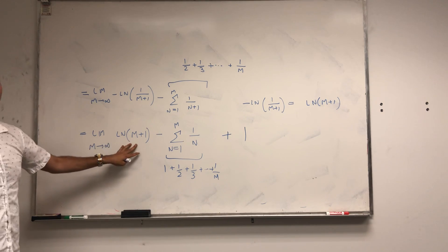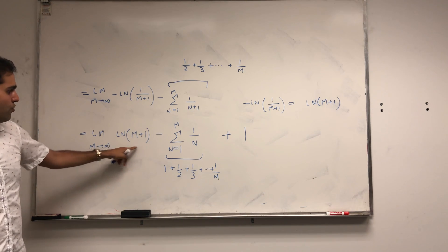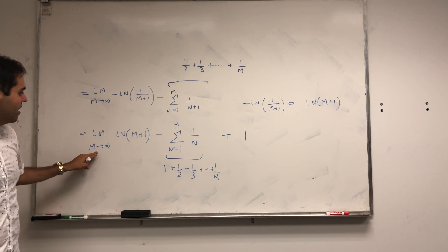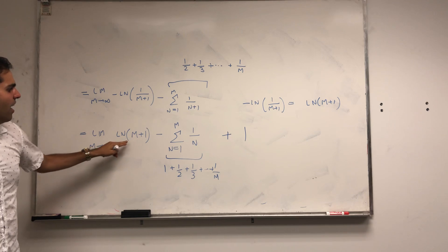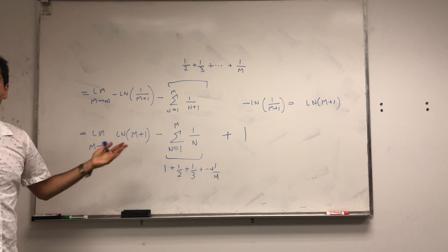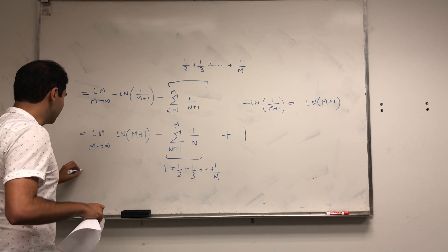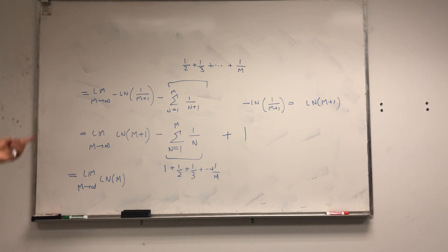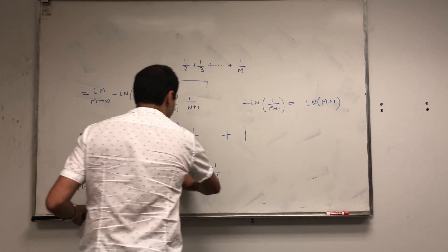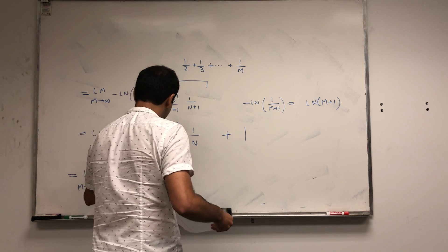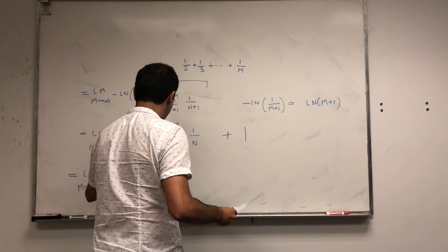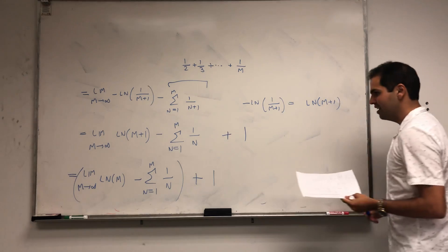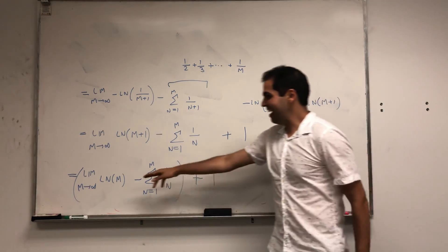And so, we have that. And then, just one little change here. If you want to just add and subtract ln of m, that's completely fine. But we want to let m go to infinity. So it doesn't matter if you use ln of m plus 1 or ln of m. So really, this is the same thing as saying limit m goes to infinity of ln of m minus sum from n equals 1 to m of 1 over n plus 1.